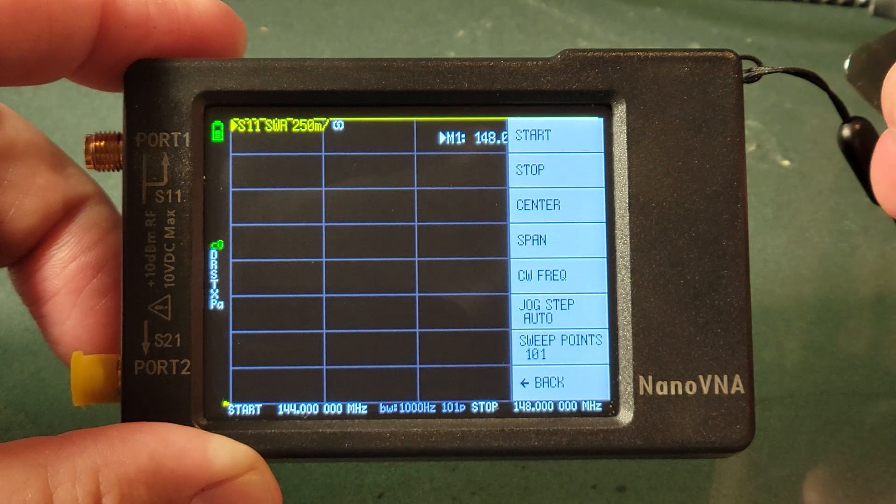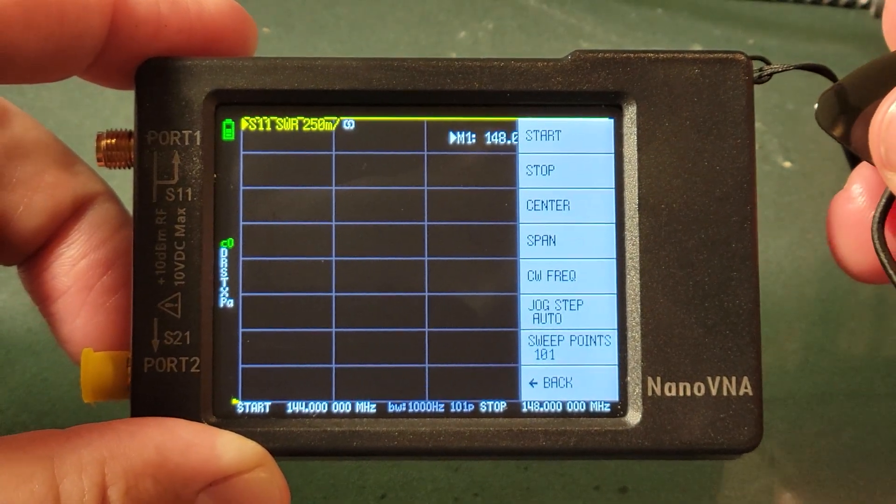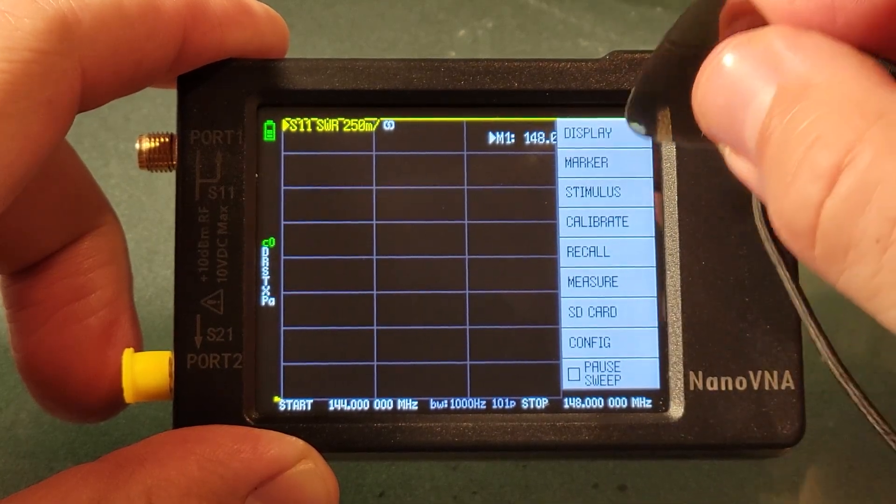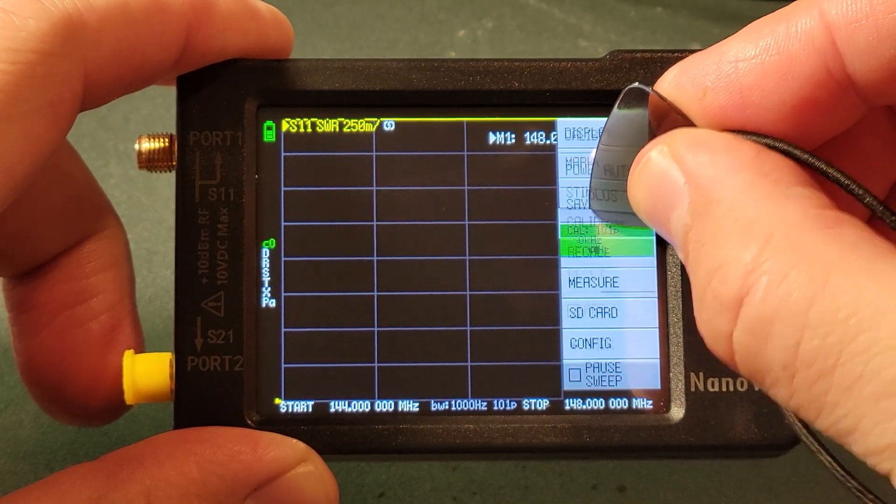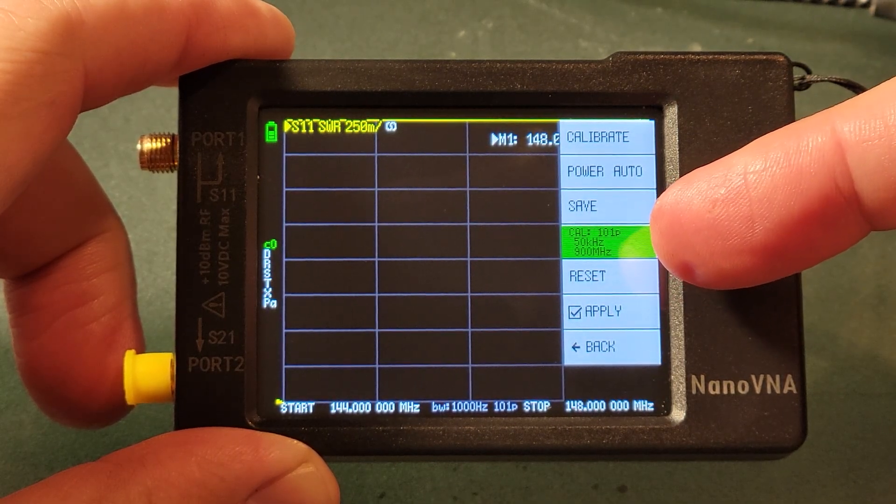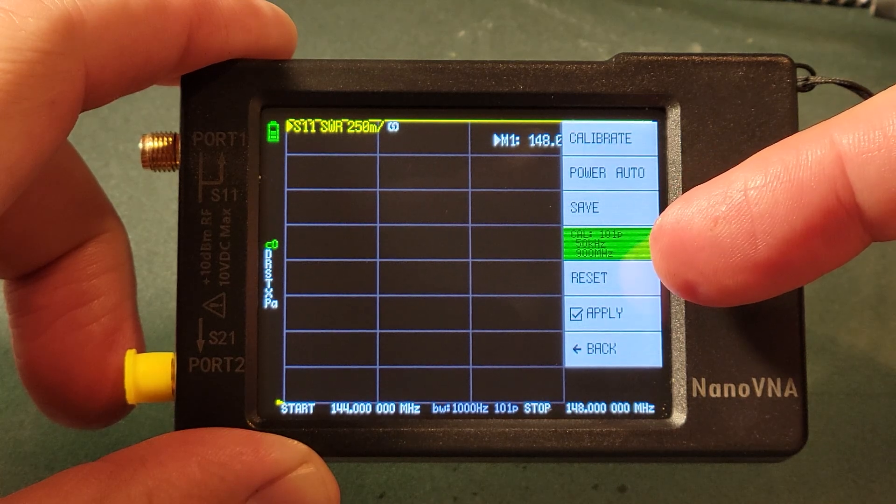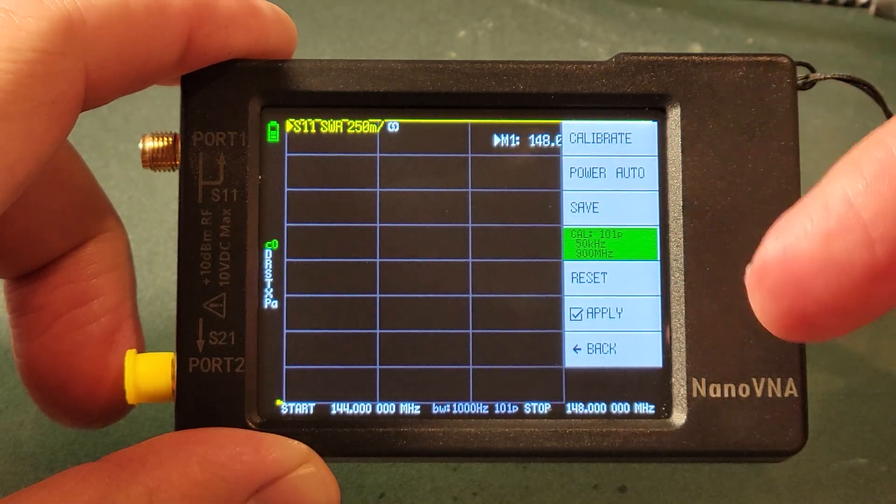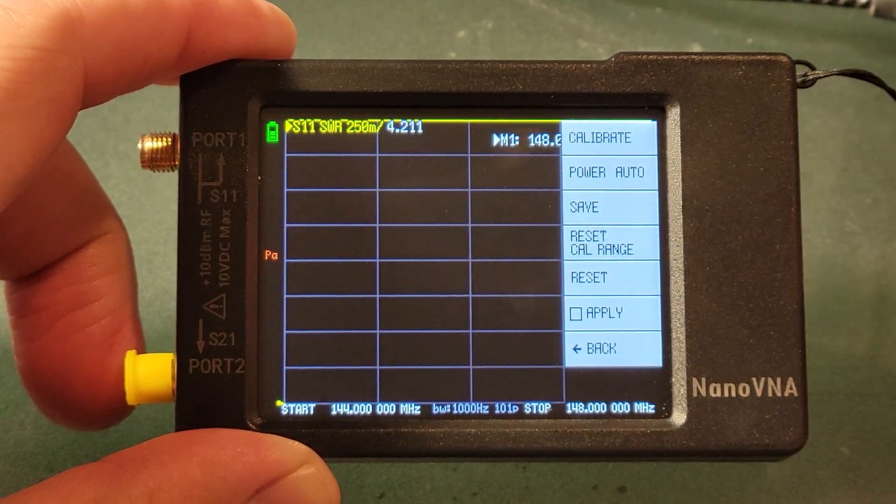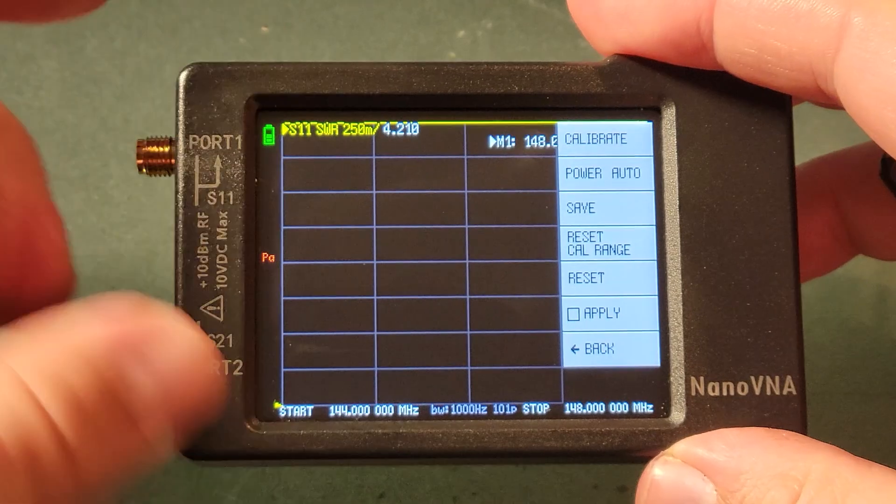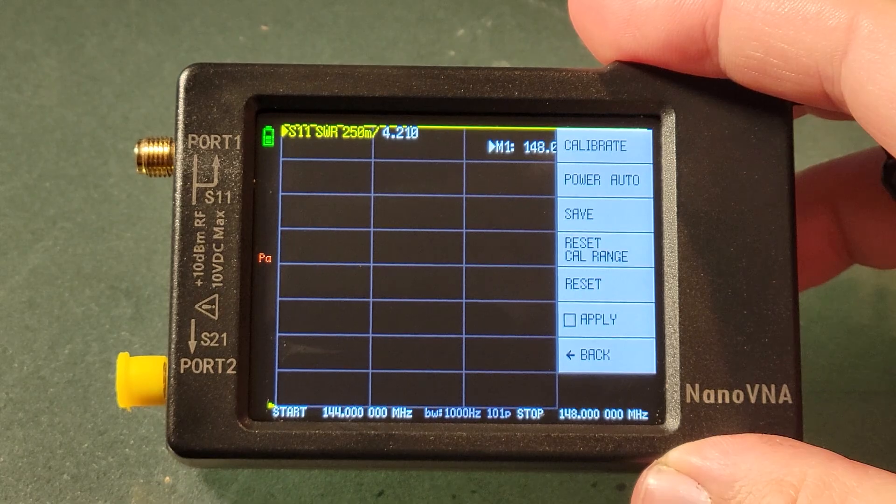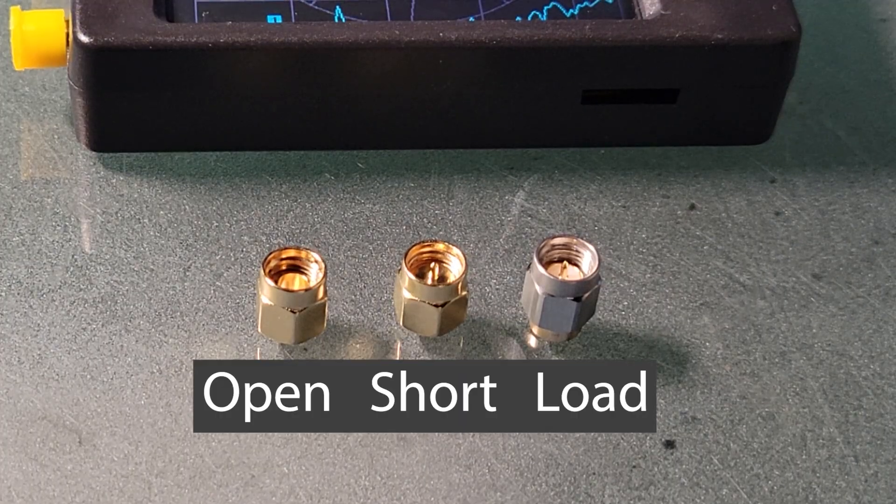The next thing we need to do in order to get an accurate reading we must calibrate the device for the start and stop point that we've set up. Go down to calibrate from the main menu. Notice here there is a calibration reading. It says 50 kHz all the way up to 900 MHz. We already have a calibration that is being used so we want to clear that away before we initiate the next step of our process. You can also see on the other side here some letters indicating the same thing. And we'll be using the caps that come with your kit.